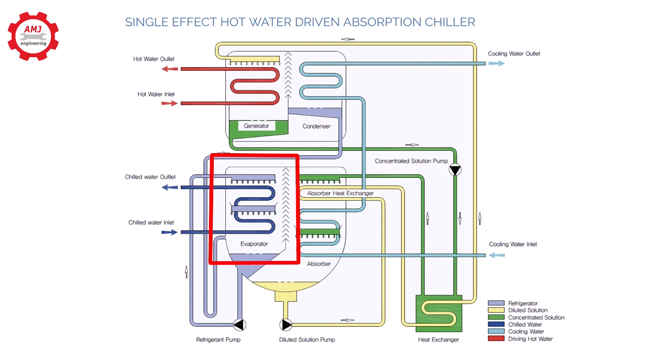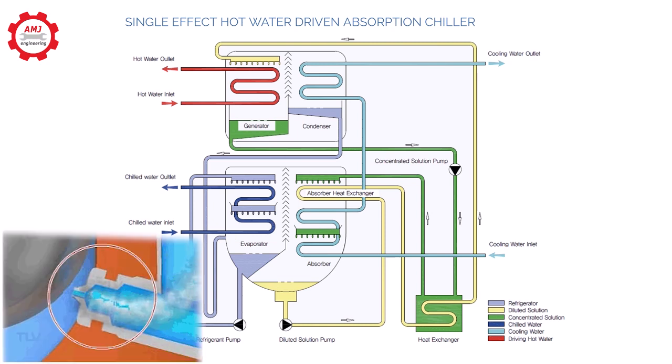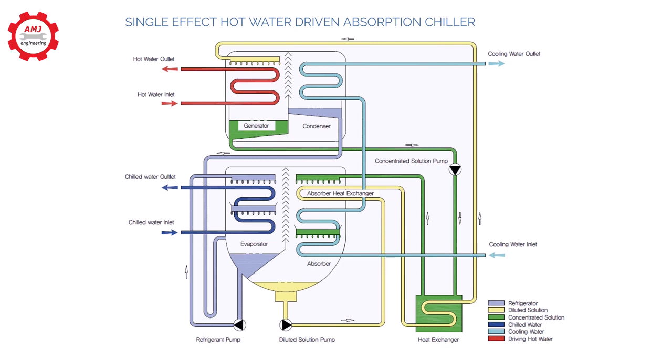Evaporator: Liquid refrigerant is dropped in pressure when it flows through an orifice into the evaporator. Due to the lower pressure in the evaporator, flashing takes place. The flashing cools the remaining liquid refrigerant down to the saturation temperature of the refrigerant at the pressure present within the evaporator.